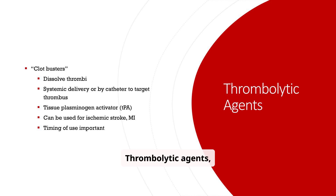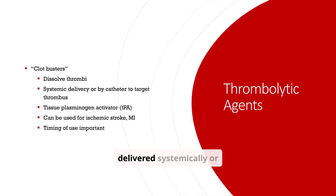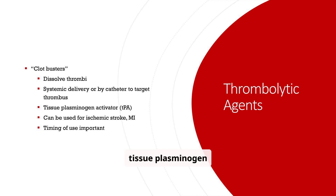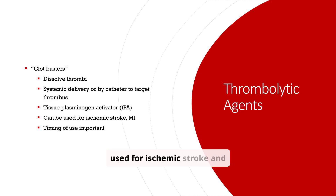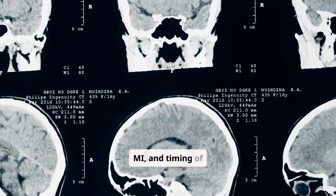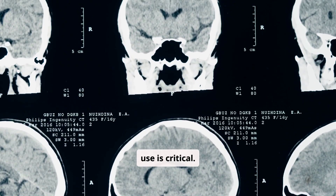Thrombolytic agents, also known as clot busters, dissolve thrombi. They can be delivered systemically or by catheter and are tissue plasminogen activators (TPA). They are used for ischemic stroke and MI, and timing of use is critical.